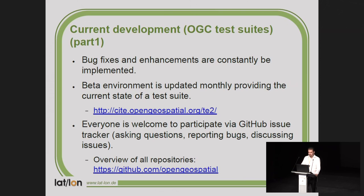For the test suites in different repositories, bug fixes and enhancements are implemented regularly, and releases are created regularly — we try to create one release each month. When releases are created, we immediately install them at the beta environment of the OGC (the URL with TE2). On that installation you always find the latest versions of all test suites. If you really want the latest version of everything, go to the beta environment — you can register and use it, and it doesn't cost anything.